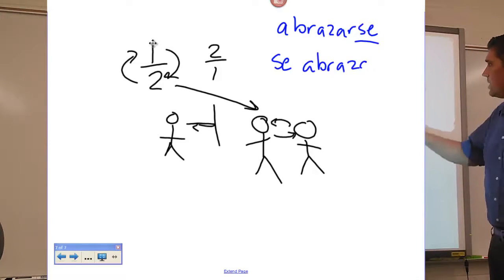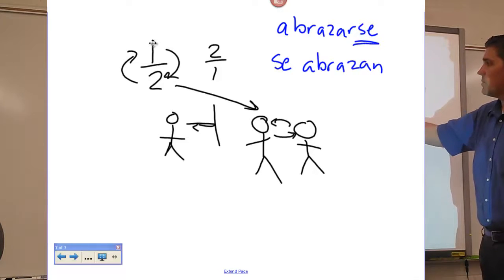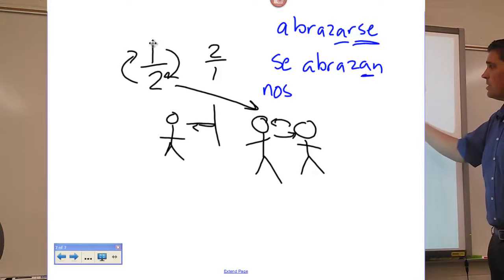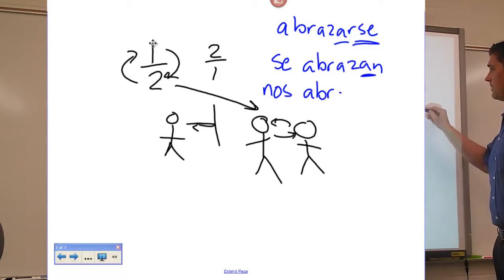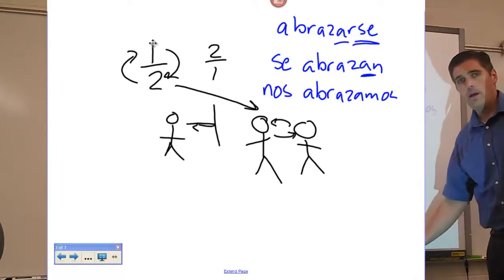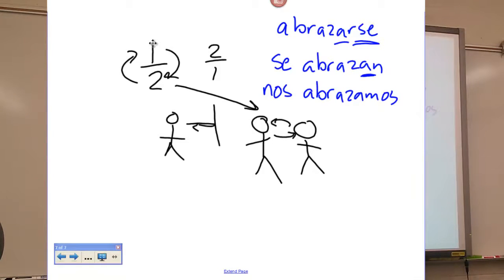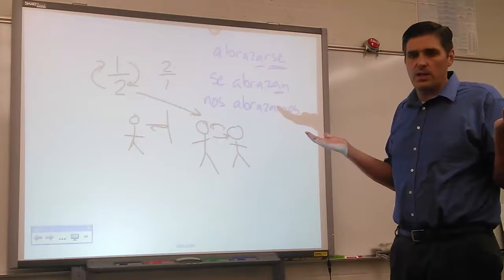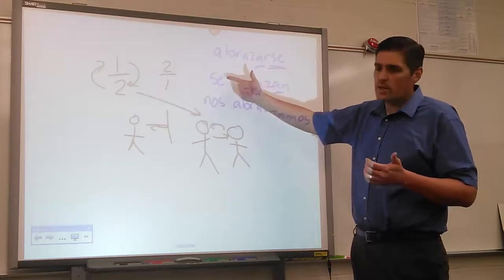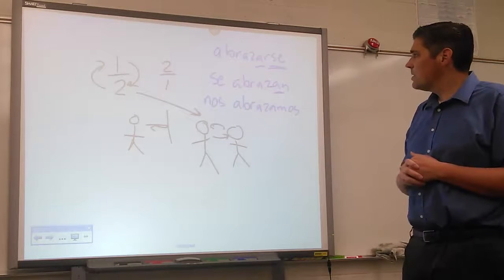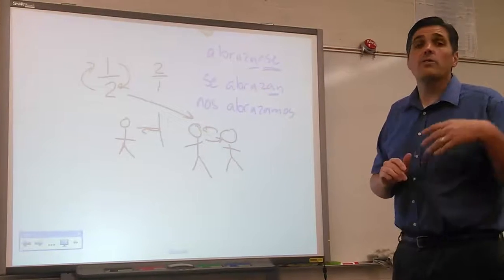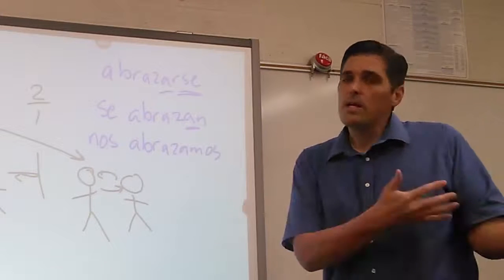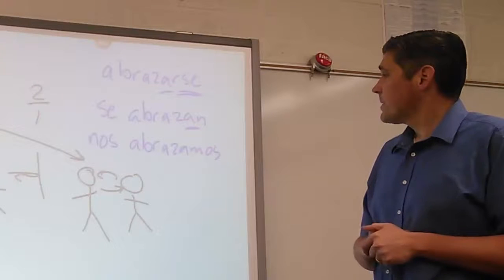We hug each other — that 'se' switches to 'nos': nos abrazamos. We also talked about how you don't use reciprocals with singulars — yo, tú, él, usted — because you wouldn't say 'I hug each other.' It's only ellos, ustedes, and nosotros. And you can make those past tense: ellos se abrazaron — they hugged each other; or se abrazaban — they used to hug each other, they were hugging each other.